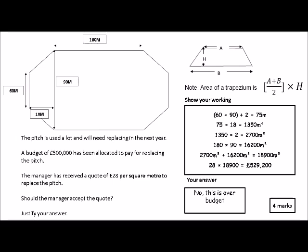So as you can see, this is all that we need to produce to get the four marks. We need to work out the area of the two trapeziums, then work out the total area of the pitch, which is 18,900 meters squared—always a squared like the little two.